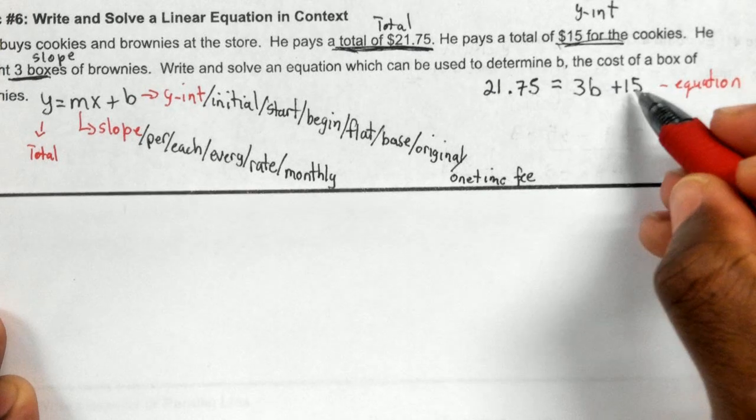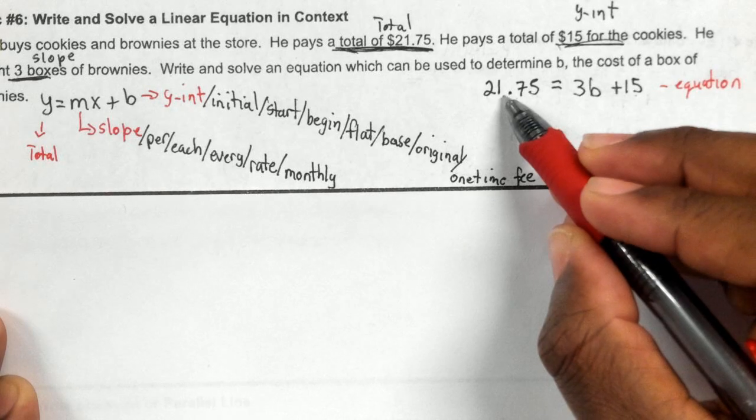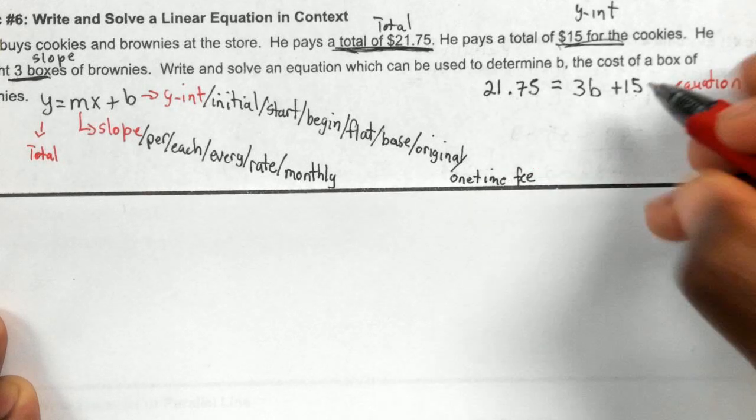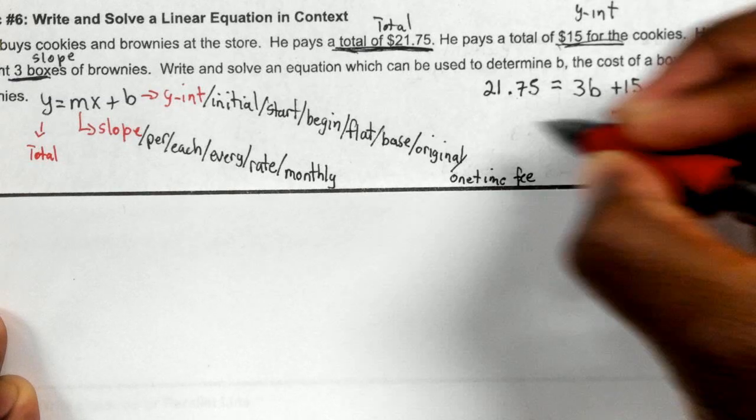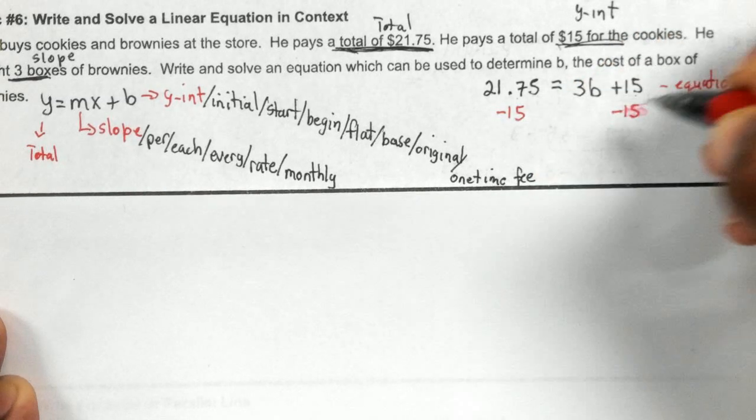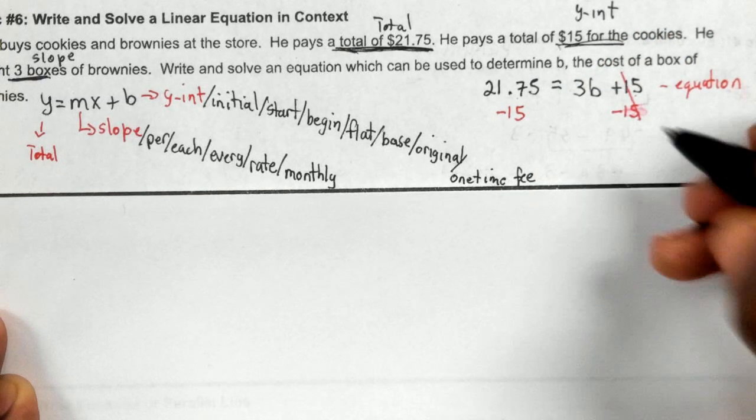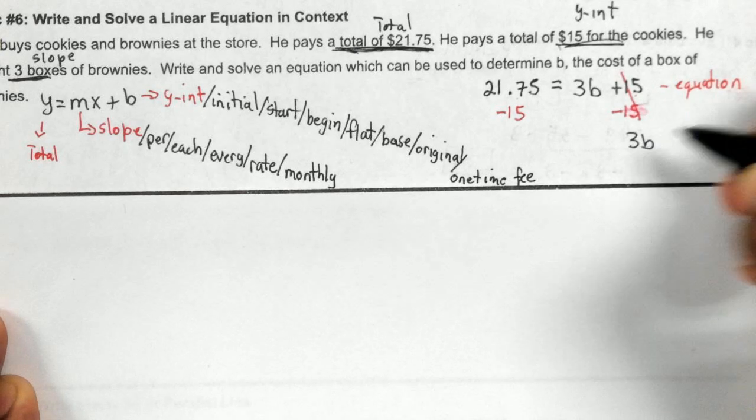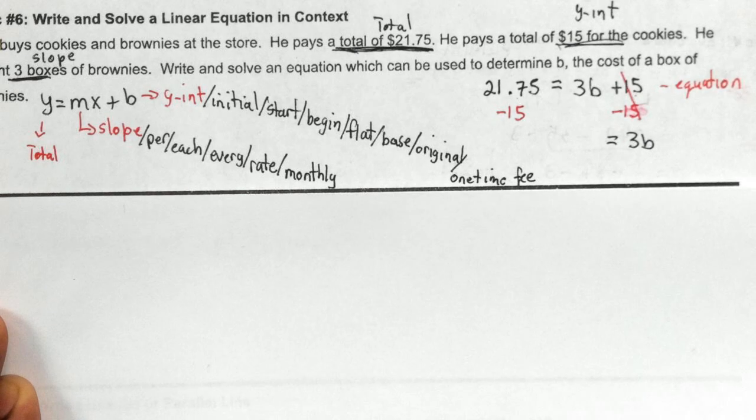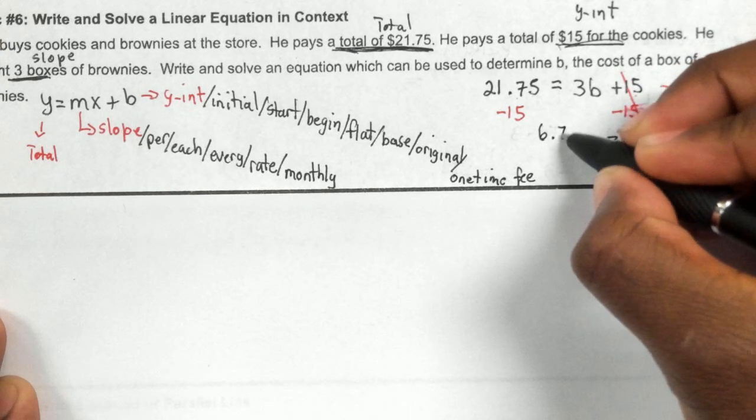To solve it, first you're going to move your constant to the left side. You're going to move this to the bigger like term by subtracting 15. Subtracting 15, that would get cancelled out. Now I have 3b equals 21.75 minus 15. You can use your calculator and you will get 6.75.